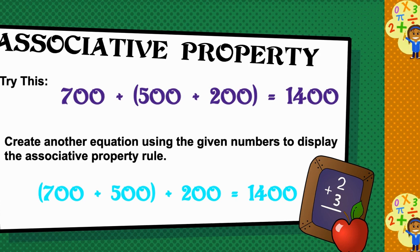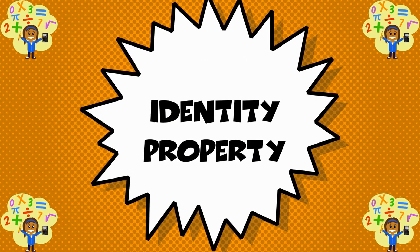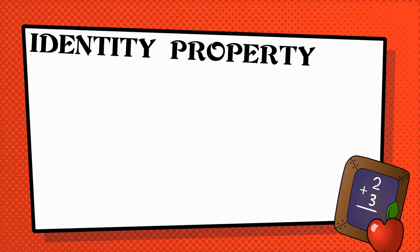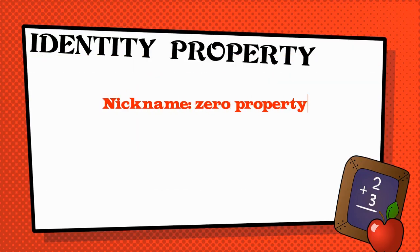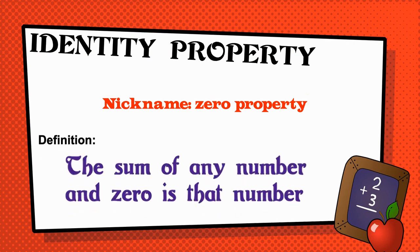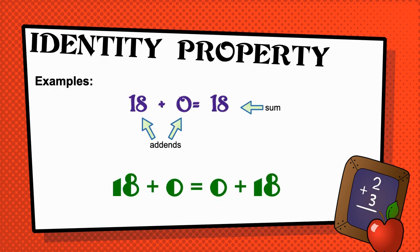Let's look at the next property, the identity property. The identity property, also known as the zero property, says that the sum of any number and zero is that number. Let's look at an example. 18 plus zero is equal to 18. The identity property tells us that any number plus zero is equal to that number. So, 18 plus zero is equal to 18, and zero plus 18 is also equal to 18.